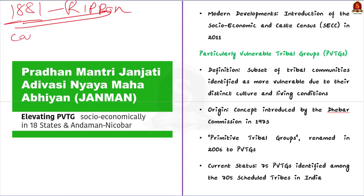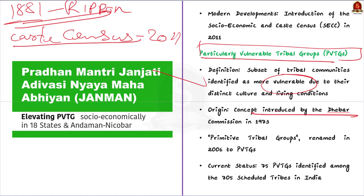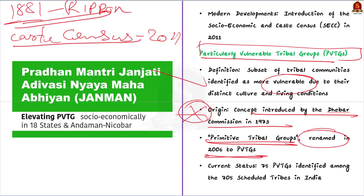Now let's explore the concept of Particularly Vulnerable Tribal Groups (PVTGs). PVTGs are subsets of tribal communities in India recognized by the government as being most vulnerable among tribal groups. This categorization aims to identify tribes requiring special attention due to their distinctive culture, way of life, and precarious living conditions. The concept of PVTGs originated from the Dhebar Commission in 1973, which initially referred to them as Primitive Tribal Groups. In 2006, the Government of India renamed them to PVTGs for a more respectful and accurate representation.